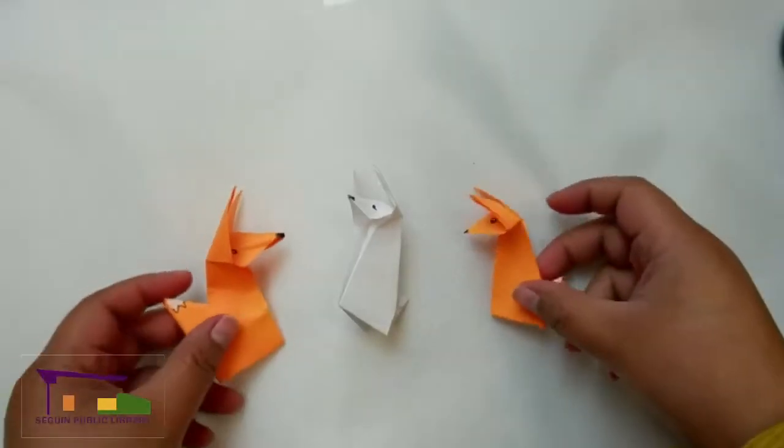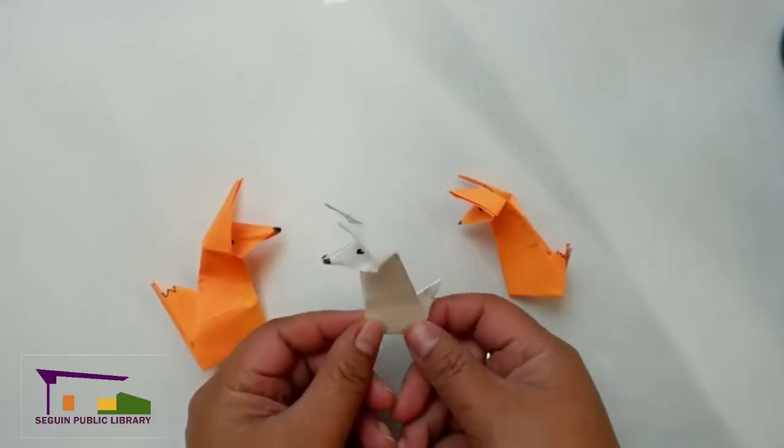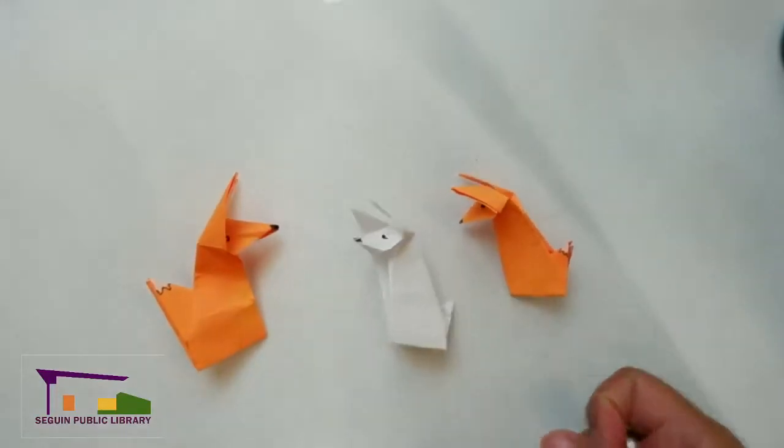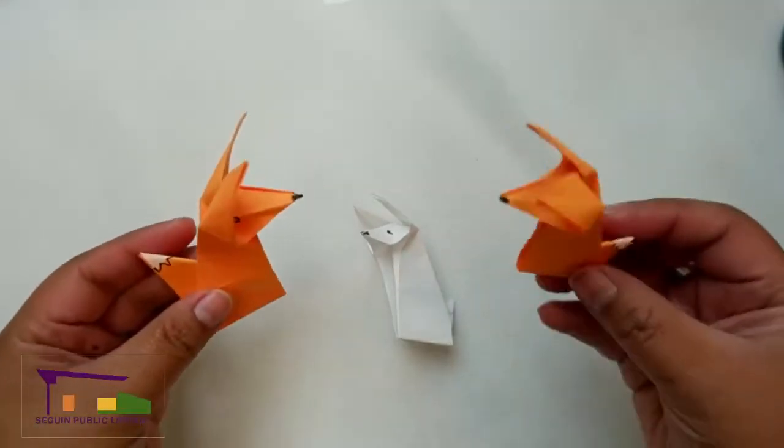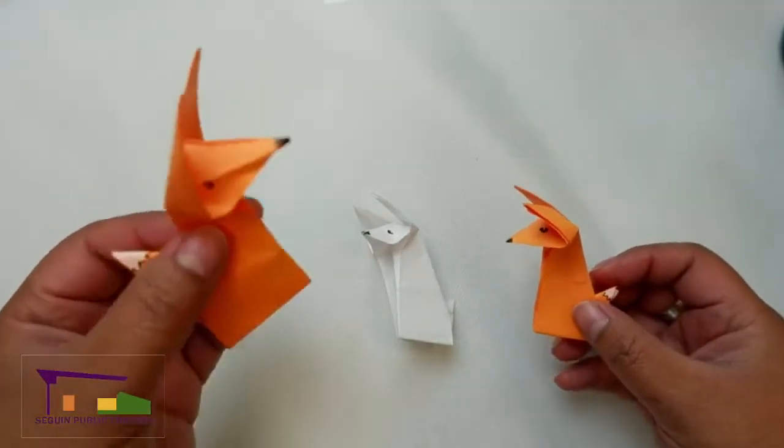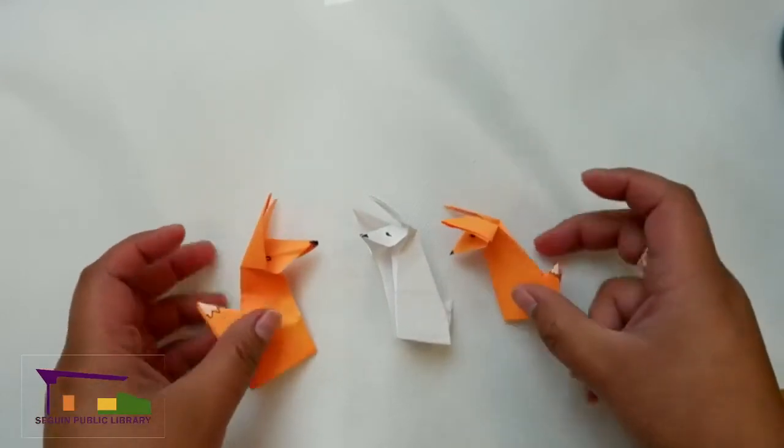So here you can see we have our little orange foxes. I've also made a white arctic fox, so you can use the same design with different paper colors and different sizes. You can see this one's a little bit bigger than this one. I think this one was made with a 13 centimeter piece of orange paper and this one was made with a 9 centimeter piece of orange paper.